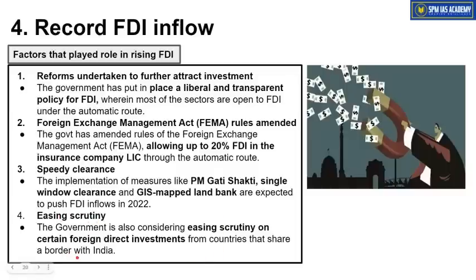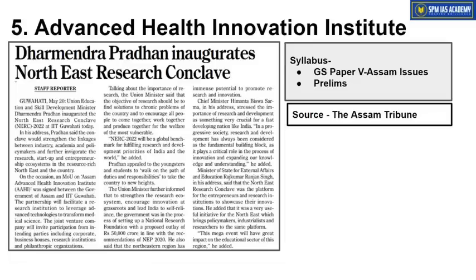Another reason for increasing FDI is easing scrutiny for countries sharing a border with India, except for Pakistan. If FDI is coming from neighboring border countries, restrictions and scrutiny are being reduced. The more scrutiny there is — checking where money is coming from, who is investing — the more delay in investment. So for all border countries except Pakistan, scrutiny on incoming FDI has been relaxed, which has contributed to increased FDI inflows.